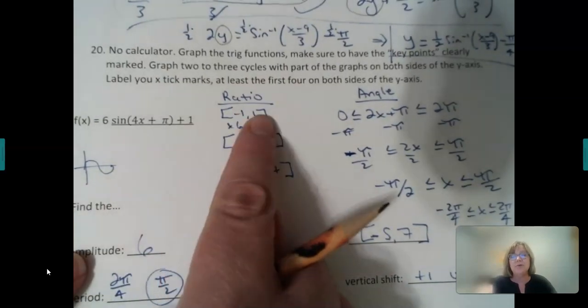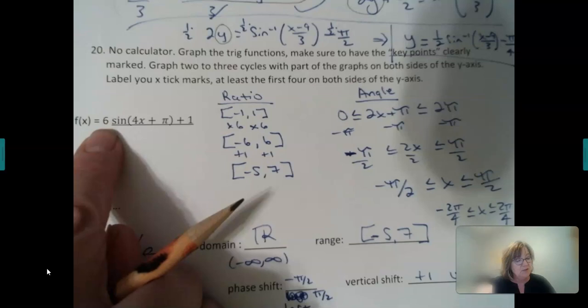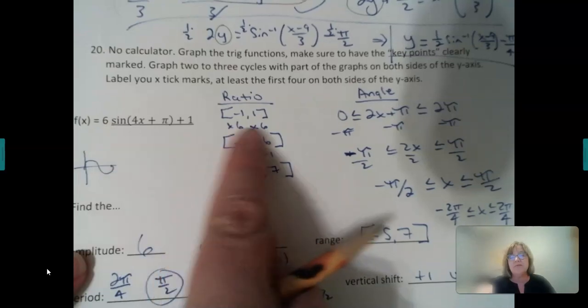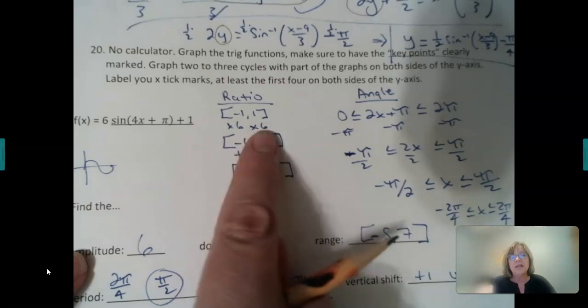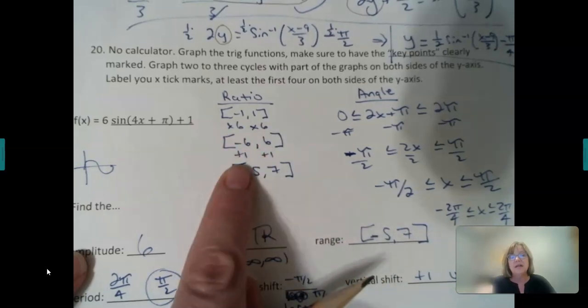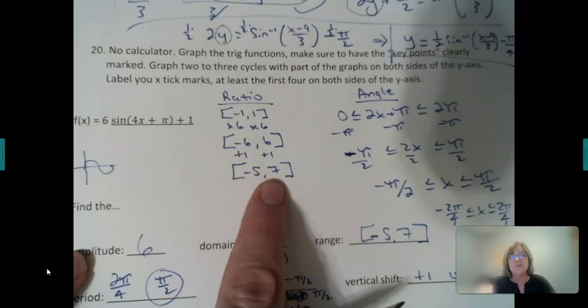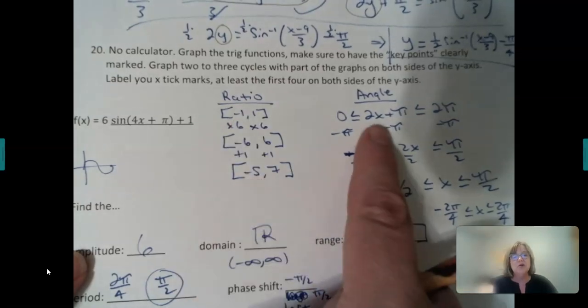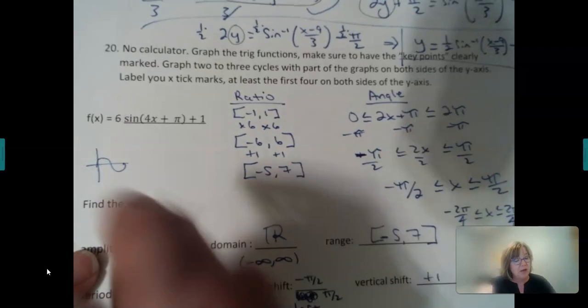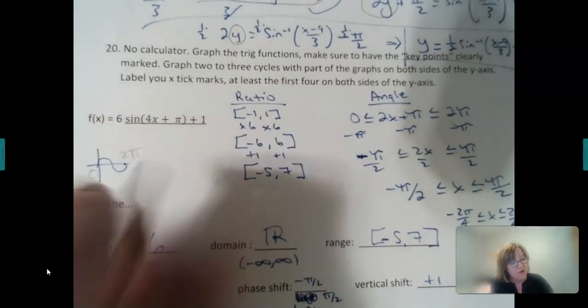Now, do the ratio normals negative 1 to 1, do the absolute value of the 6. Times 6 times 6, whether it's positive or negative, absolute value. Shift it up 1, so negative 5, 7, that's your ratios, that's your y-axis. Trap your angle between 0 and 2 pi, because that's the normal behavior.